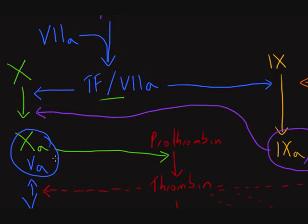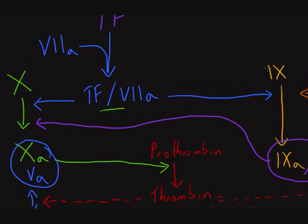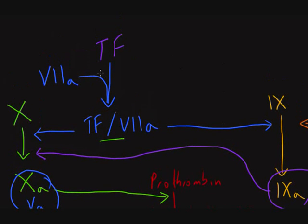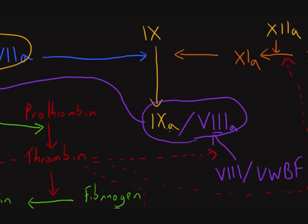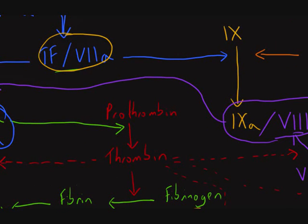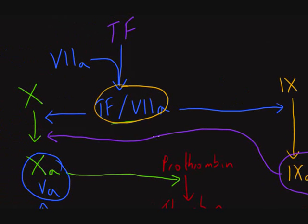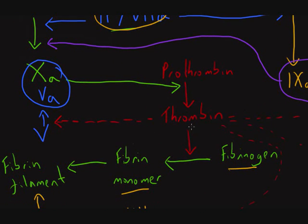How do we get activated factor 10? Through the extrinsic and intrinsic pathways. The main extrinsic pathway route is from tissue factor and factor 7 combining together as a cofactor enzyme group that converts factor 10 to its activated form. Alternatively, the intrinsic route uses activated factor 9 and activated factor 8. In all of these processes, thrombin plays an important role in increasing activity — so we have a very small start-up effect, a small amount of tissue factor needed, and once thrombin is produced, the whole process grows exponentially and positive feedback takes over, allowing rapid production of fibrin filaments.